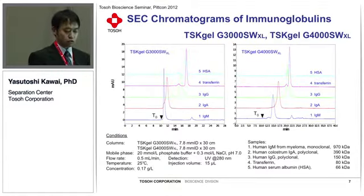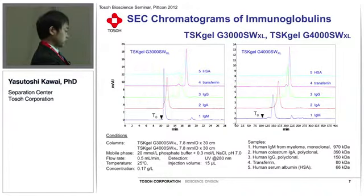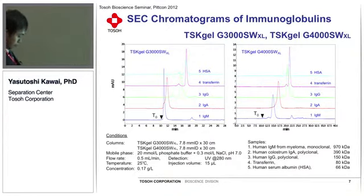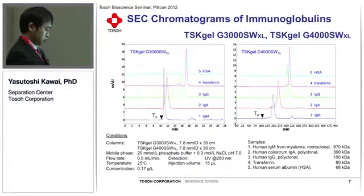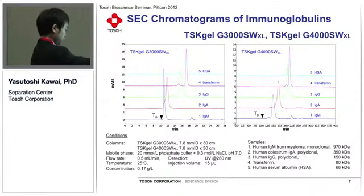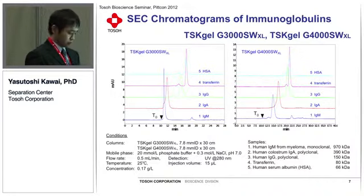I'd like to show some examples of protein separation. The first is separation by SEC, size exclusion chromatography. This slide shows the SEC chromatogram of immunoglobulins with a variety of molecular weights. Samples and their molecular weights are shown here, including transferrin, human serum albumin — not immunoglobulin, but they are the other major components of human serum. This chromatogram was obtained with TSK-GEL G3000SWXL, which provides good separation for most proteins.